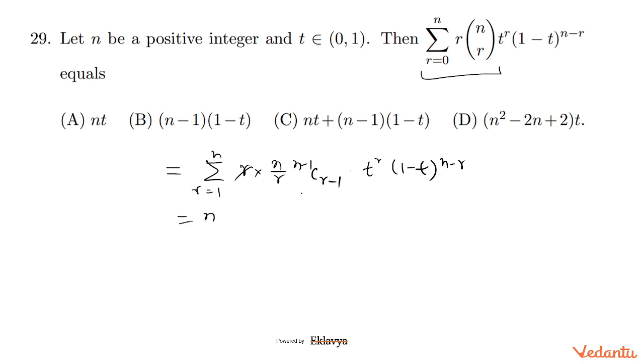So this is valid. N is independent of R, so N we can factor out. Now we have N minus 1 C R minus 1, T raised power R minus 1, and T we factor out. So here it becomes 1 minus T raised power N minus R, R from 1 to N.